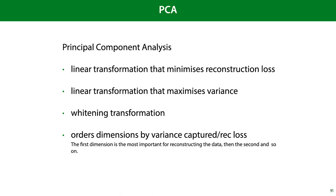So to recap, principal component analysis is a linear transformation to a low dimensional space that minimizes reconstruction loss or equivalently that maximizes variance. It can also be used as a whitening transformation and it orders dimensions by either the amount of variance captured or the reconstruction loss. That is, the first dimension is the most important for reconstructing the data, then the second, and so on.